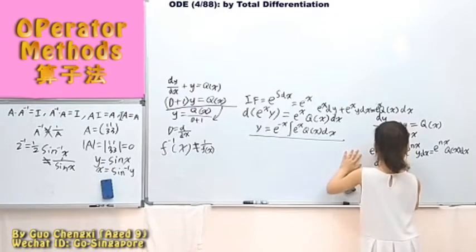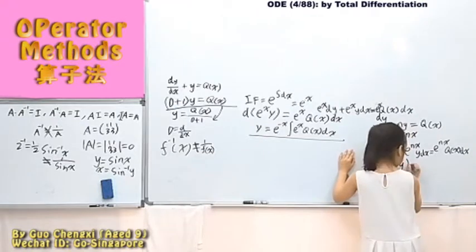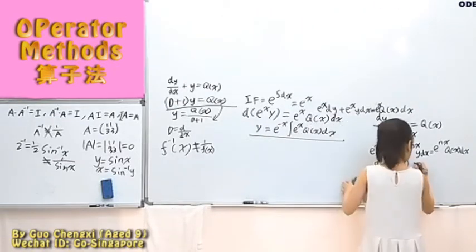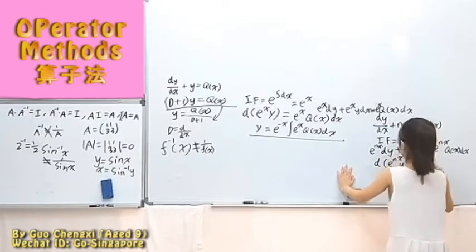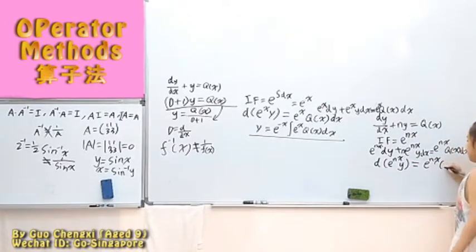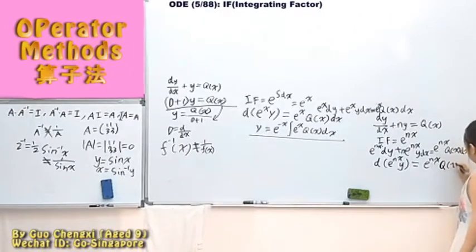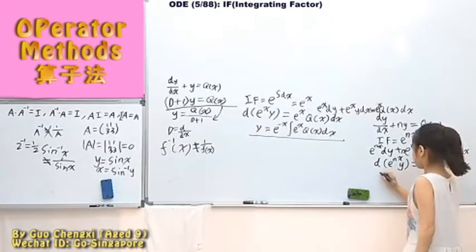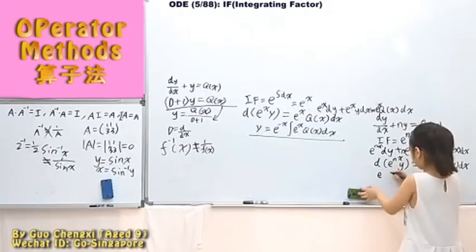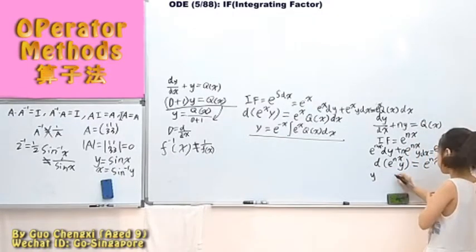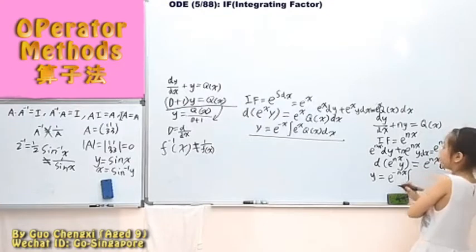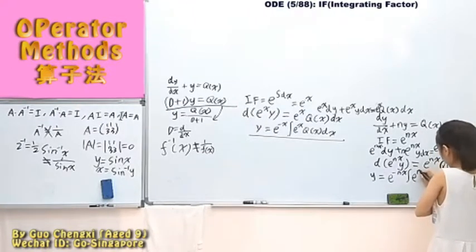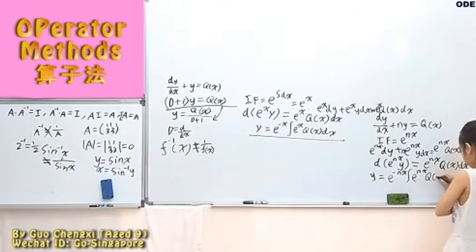We get e to the power of nx. Then here we'll have the integral of e to the power of nx times q(x) dx. Then it becomes y equals e to the power of negative nx times the integral of e to the power of nx times q(x) dx.